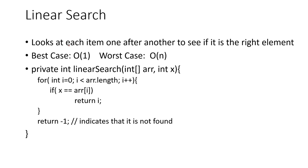So next is the linear search. It looks at each item, one after another, to see if the element is the correct one that we're looking for. The best case, of course, is if it's at the very beginning. The worst case is if it's at the end. So that's why it's going to be Big O N for the worst case, Big O one for the best case.